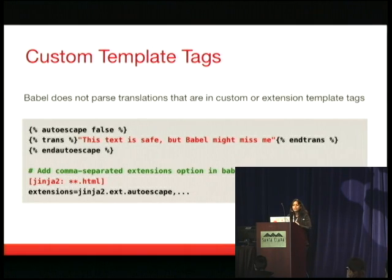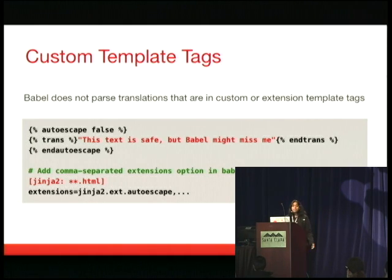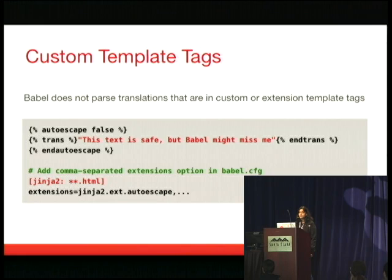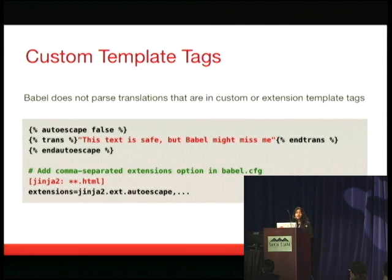We also had some trouble working with custom template tags. You may define your own template tags in your files, and Babel needs to be notified of these external tags. Because if it doesn't know about these tags, it'll actually skip gettext calls and you will not see extractions for the strings that are in those tags. In your mapping file, which you pass into the extraction mechanism, you can call the extra extensions option and pass in all the different custom tags you're using in your templates so that Babel knows it has to extract these strings.